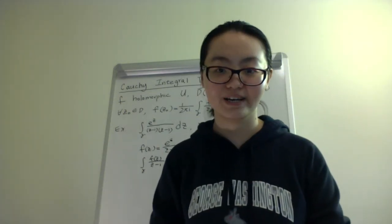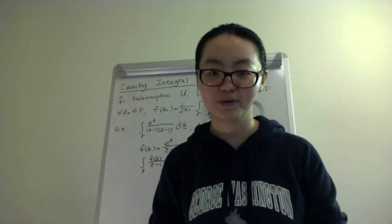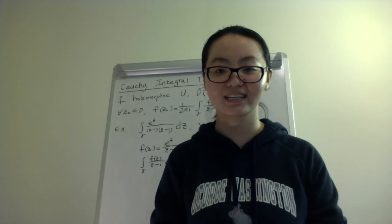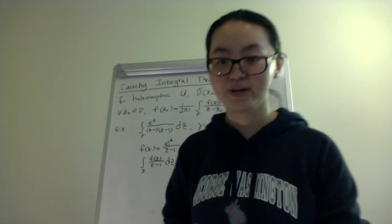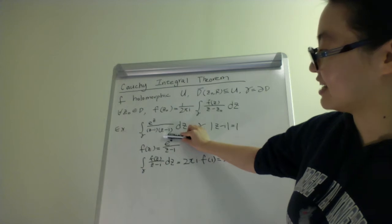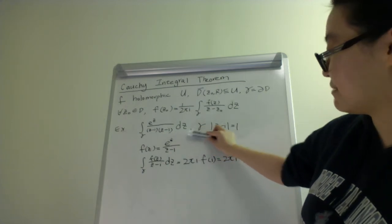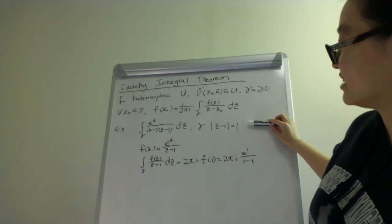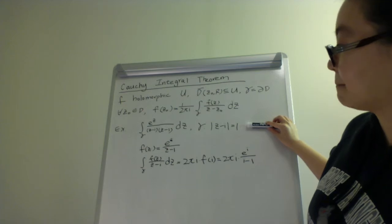I like this theorem because it provides a neat way for us to deal with messy or complicated integrals. For example, if we were to evaluate the integral of e to the z over z minus z times z minus 1 dz on gamma, and gamma is a circle centered at i with radius 1.